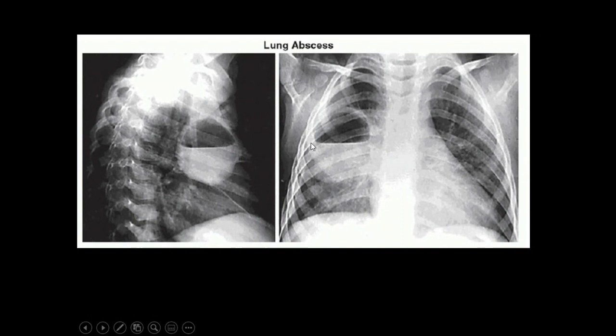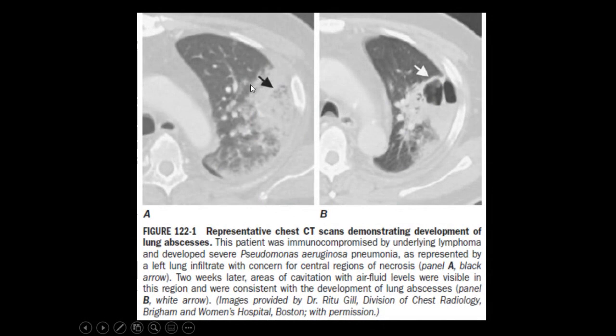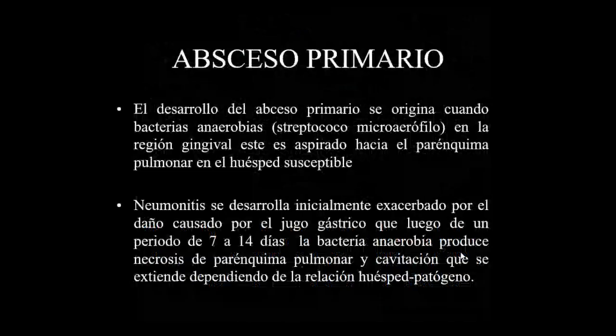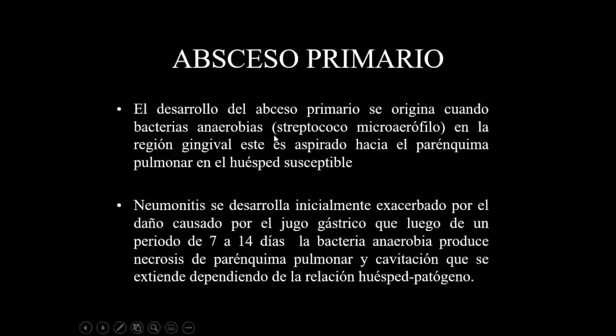La imagen radiológica del absceso pulmonar muestra una cavidad con nivel hidroaéreo y pared gruesa. La tomografía permite ver con mayor detalle la extensión de la lesión, como en el caso de un infiltrado neumónico en el pulmón izquierdo que se cavita, correspondiente a una neumonía por Pseudomonas en un paciente inmunosuprimido con quimioterapia por linfoma.